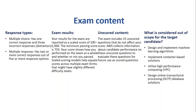Regarding unscored content: there are 15 questions in the exam which are unscored, meaning they don't affect your score. Even if you get them correct or wrong, it doesn't impact your score. AWS collects this information about candidate performance on the unscored questions to evaluate these questions for future use.